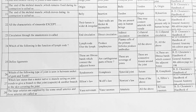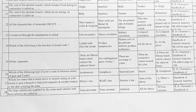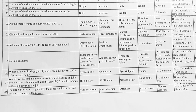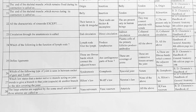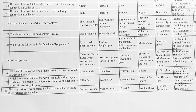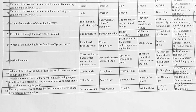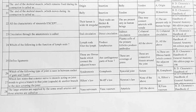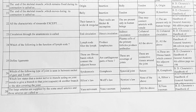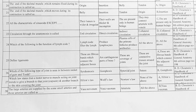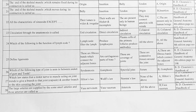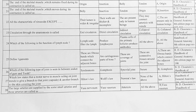Next, which law states that a motor nerve to muscles acting on a joint gives a branch to that joint or capsule and another branch to the skin covering the joint? Options: A. Hilton's law, B. Wolff's law, C. Newton's law, D. none of the above. Option A is correct, Hilton's law.